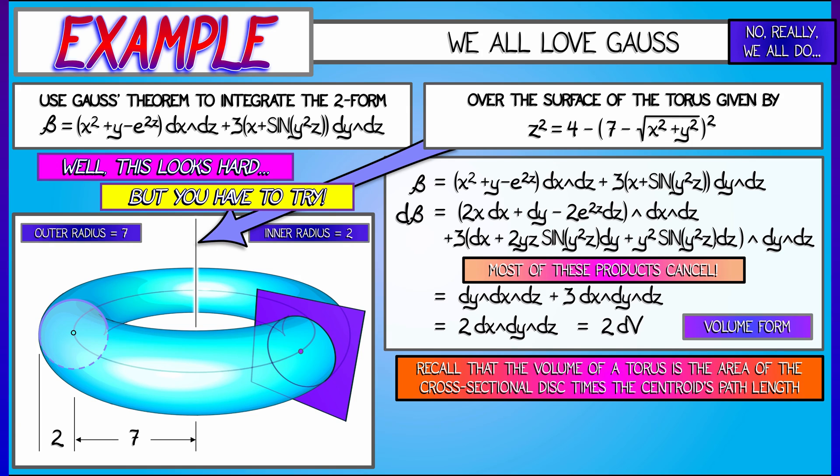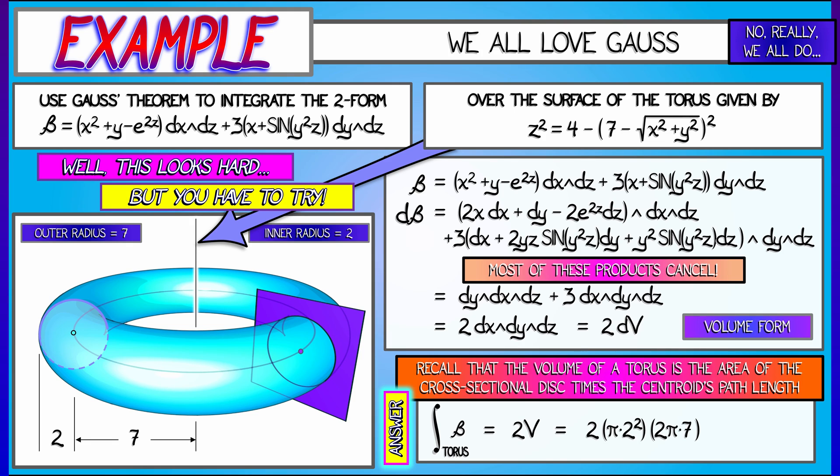With that in mind, let us get a final answer by showing that the flux out of this boundary torus is twice the volume of the interior region. The cross-sectional disk has area π × 2². The centroid of that disk travels along a circle of radius 7. That path length is 2π × 7. Multiply all that together, you get 112π² for a final answer.